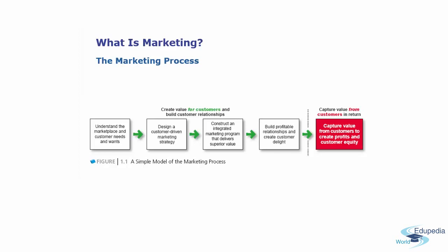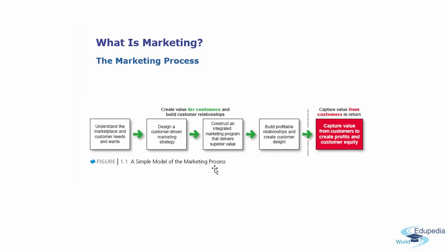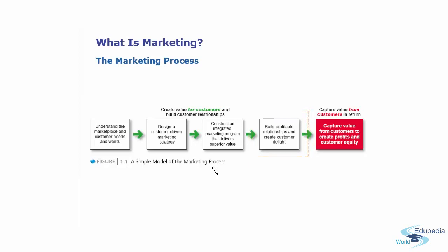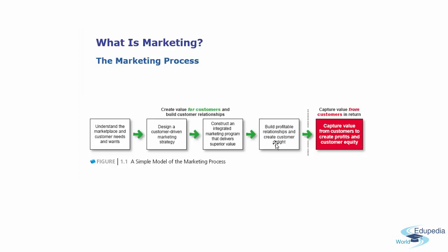Now let's understand the marketing process. This is a simple model: first, understand the marketplace and customer needs and wants; then design a customer-driven marketing strategy; construct an integrated marketing program that delivers superior value; then build profitable relationships and create customer delight — I want to highlight the word 'delight' because that's exactly what you're striving for with your product and service.